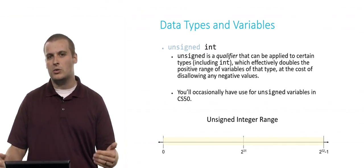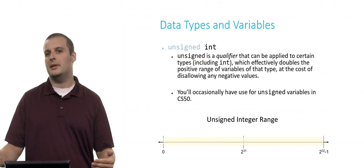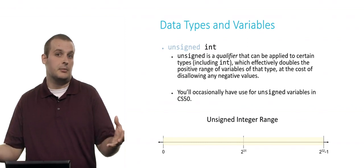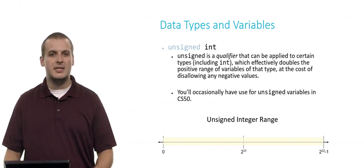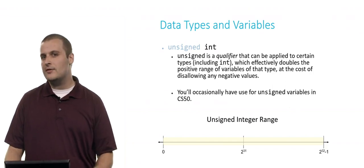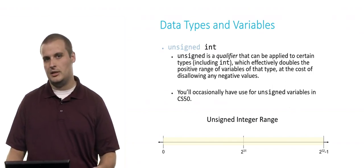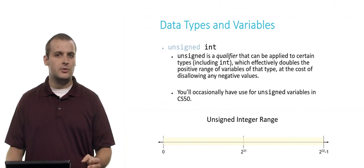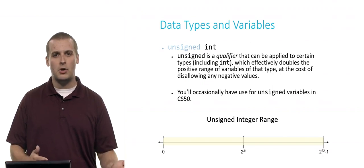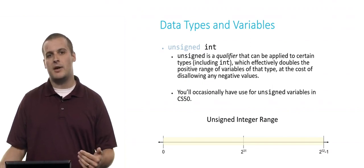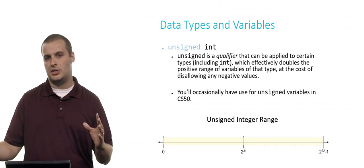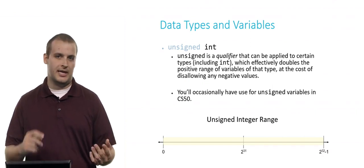So if you have numbers that you know will get higher than 2 billion, but less than 4 billion, for example, which is 2 to the 32nd power, you might want to use an unsigned int if you know your value will never be negative. You'll occasionally have use for unsigned variables in CS50, which is why I mention it here. But again, the range of values that you can represent with an unsigned integer, as opposed to a regular integer, are 0 to 2 to the 32nd power minus 1, or approximately 0 to 4 billion. So you've effectively doubled the positive range that you can fit, but you've given up all of the negative values.